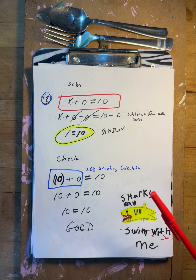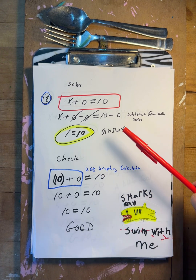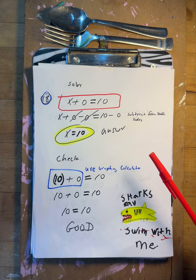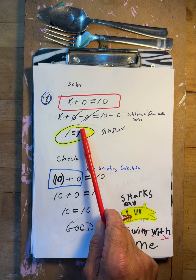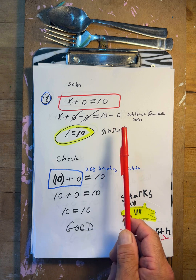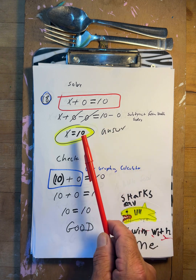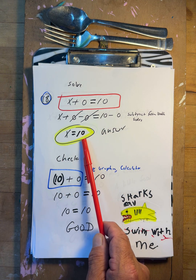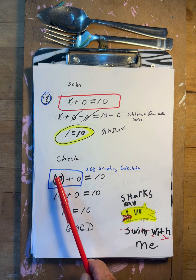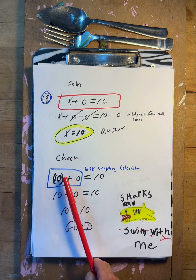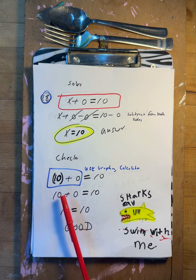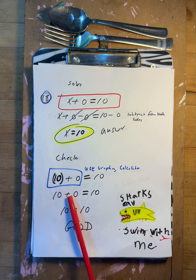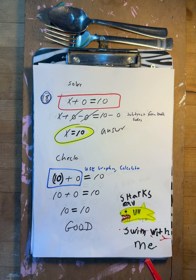Question number 18: x plus zero equals ten. Minus zero, minus zero — easiest way. So x equals ten. Does that work? Put ten in: ten plus zero is ten. Yes.